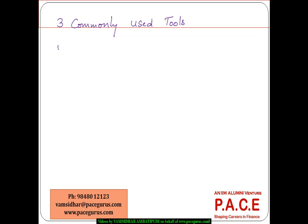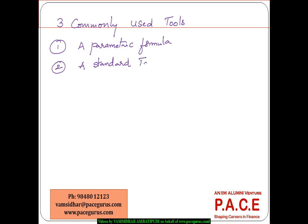The first is with respect to the usage of a parametric formula — we try to use a formula and using that formula we smoothen across the ages. We can also refer to a standard mortality table or a national statistics table which might have already been published, or finally we can look at a graphical approach to do the graduation.